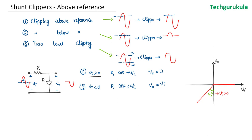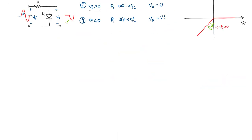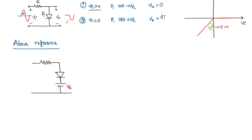Here the reference has been zero volts. That's why above zero volts the voltage is clipped, giving us that output waveform. Now we're going to change that reference by adding an explicit reference voltage Vr in the circuit — an above-reference clipper with a current-limiting resistor to ensure current is not too high when the diode is forward biased, and a voltage source Vr below the diode.